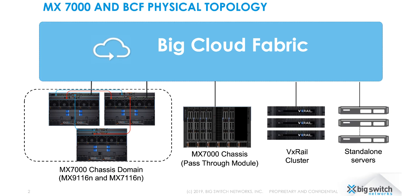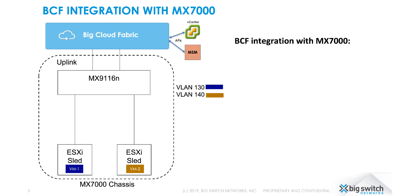Bicloud Fabric serves as a unified fabric that brings the power of simplified management and automation to workloads residing on the MX7000 chassis domain, a standalone MX chassis, VxRail cluster, or just standalone servers.